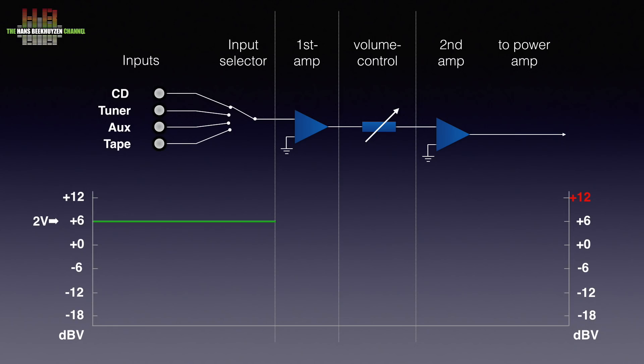If we then assume that the first amplifier stage is used for buffering and has no gain, the voltage stays at plus 6 dBV. When the volume knob is turned completely clockwise, there will be no attenuation, leaving the level at plus 6 dBV. The second amplifier stage we also set to 0 dB amplification, so the output level of the pre-amp is equal to the input level of plus 6 dBV.